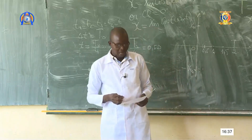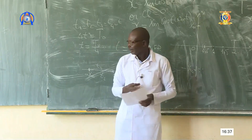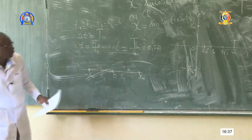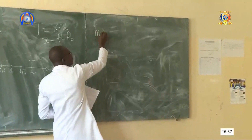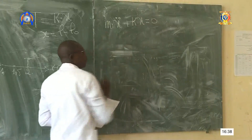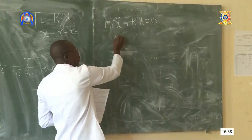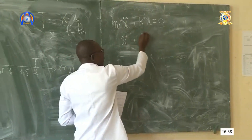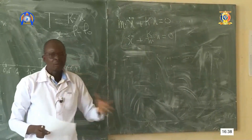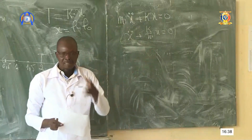La question 3 est de savoir pourquoi on a divisé l'équation différentielle par M. L'équation différentielle est M·ẍ + K·x = 0. On peut laisser l'équation comme ça, ou bien diviser le tout par M. Si on divise par M, ça donne ẍ + (K/M)·x = 0. C'est simplement pour obtenir la forme mathématique standard de l'équation différentielle.